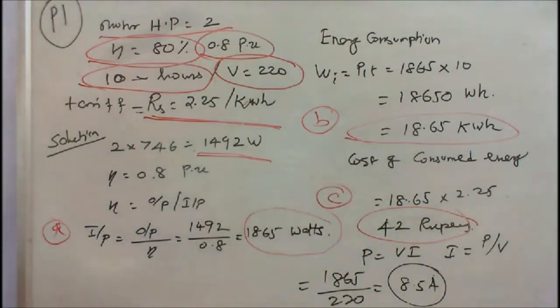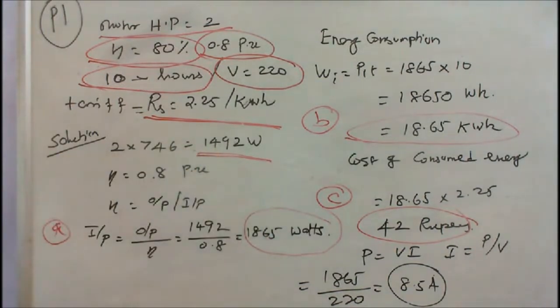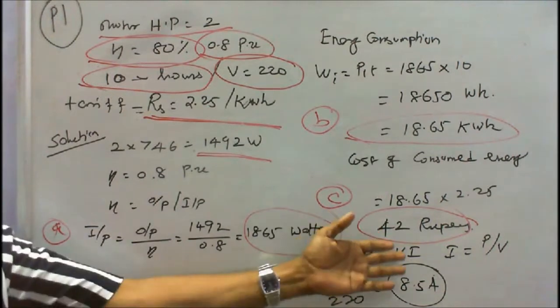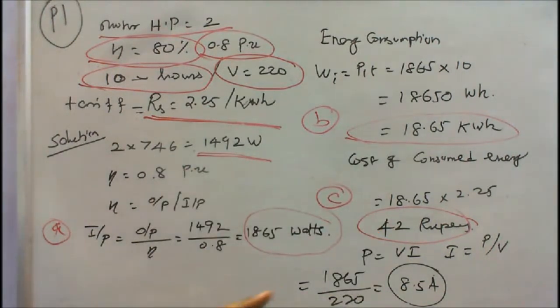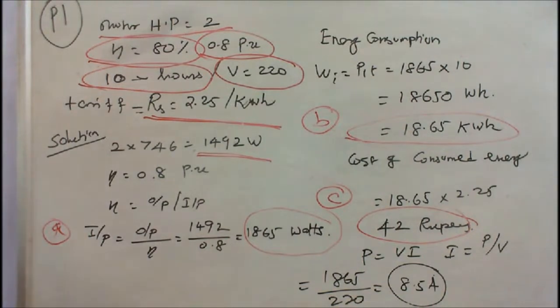Next we have to find how much current the connecting wires will carry. We know that P equals V times I, and we know the power 1865 divided by operating voltage 220, we will get 8.5 amps.